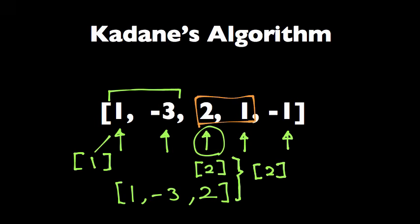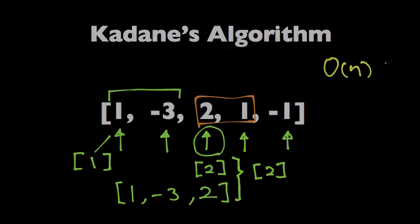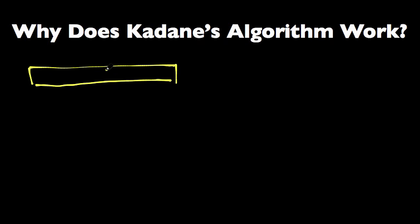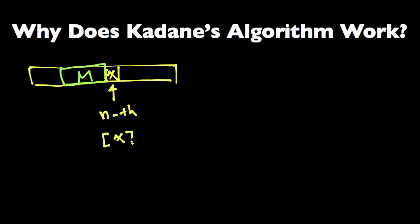This algorithm is much faster than the brute force algorithm — it runs in linear time. Now you might ask, does it actually work, and why does it work? Let me explain. Let's say we're given an array and we're at the nth index. The element here is x, and we know the maximum subarray ending at the previous index, which we'll call m. The core idea is that the maximum subarray ending at the nth index is either just x, or x combined with m — so mx.